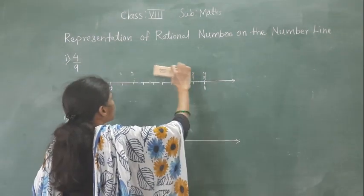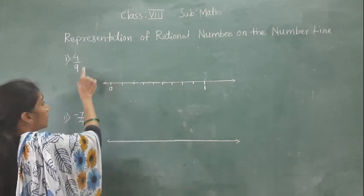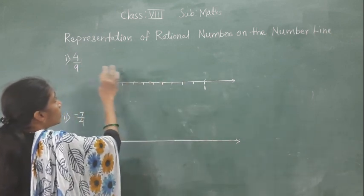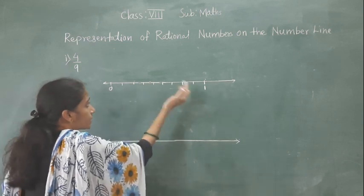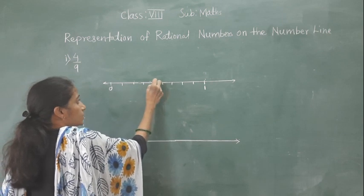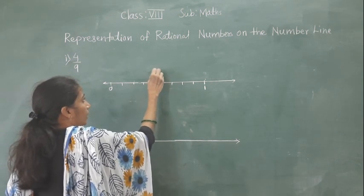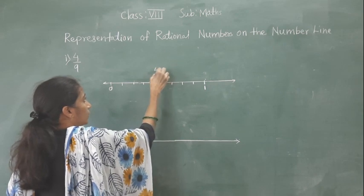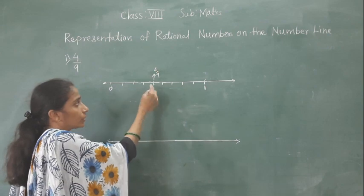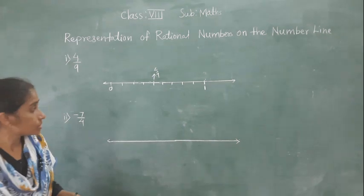Now, what is asked is the representation of rational number 4 upon 9. We have to show this number on the number line. It is: 1 upon 9, 2 upon 9, 3 upon 9 — so 4 upon 9 will come here on the number line. The 4th part is 4 upon 9. Understood, everyone?